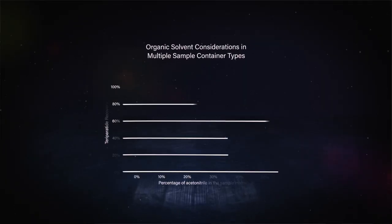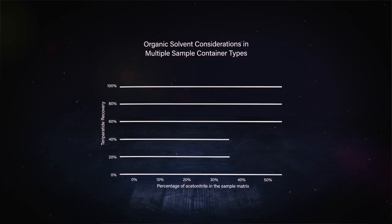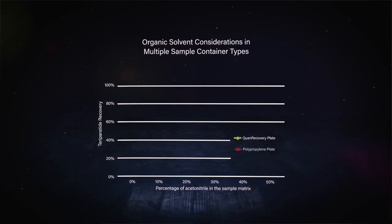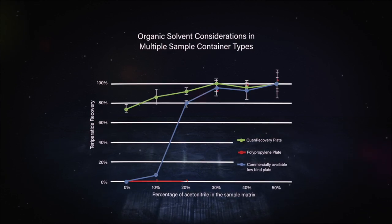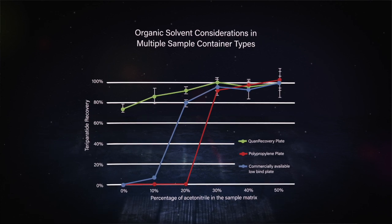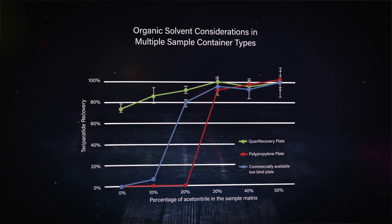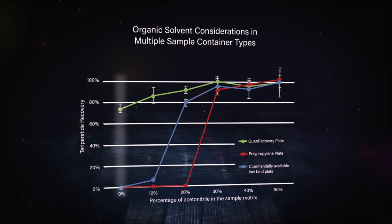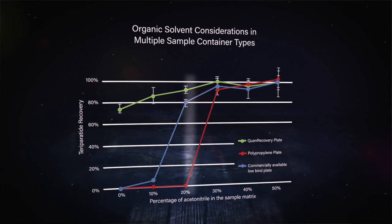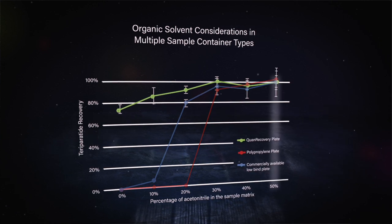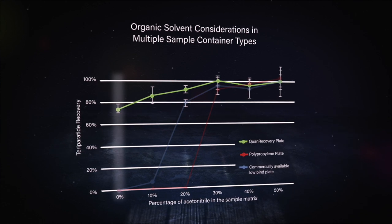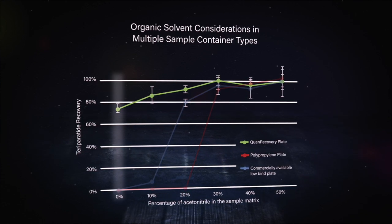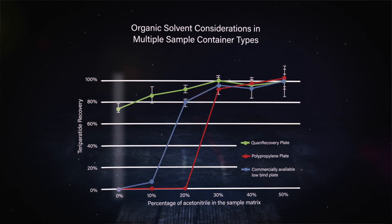So Kim, how did the results look from that experiment we set up? Sure, so we ran the three different sample containers: the Quan recovery plate, a polypropylene plate, and a commercially available low-binding plate for comparison. We injected the teriparatide and looked at recovery in each container. As we move from zero percent acetonitrile up to ten, twenty percent and so on, you can see some real differences in recovery. With the Quan recovery plate, even at zero percent acetonitrile, we're getting some recovery of the teriparatide, where we're actually not seeing that in the polypropylene or the commercially available plate.